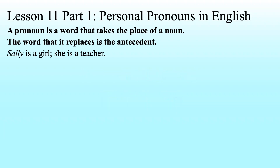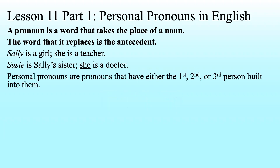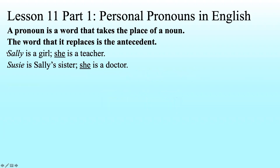Sally is a girl. She is a teacher. In these sentences, Sally is the antecedent for the pronoun 'she.' We could have said 'Sally is a girl. Sally is a teacher,' but that sounds funny because we've repeated Sally twice. So instead of repeating Sally the second time, we say 'she.' She is a pronoun and the antecedent is Sally, meaning that 'she' means Sally in this particular sentence.